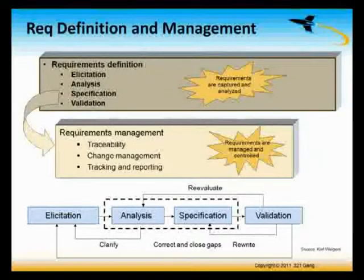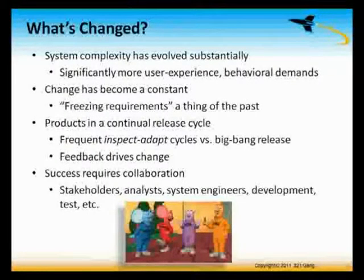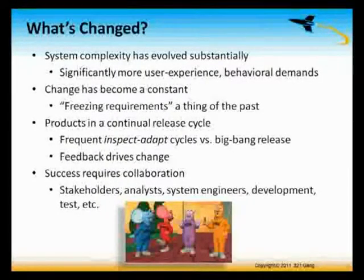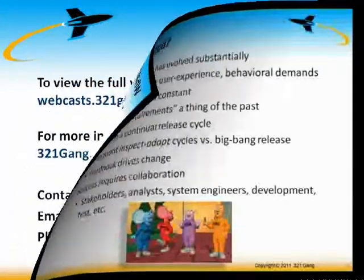We've been doing that effectively for the last several decades in software systems, with varying levels of success. An observation about what's changed over the last 10 years is that system complexity has grown dramatically, even just in the last five years. There's much more user experience and behavioral demands. If you think about the systems we look at today — a gas pump, your phone, any type of system — there's a lot more dynamic user behavioral interaction. Those are the types of activities that are very difficult to specify up front, to come up with a fixed requirement for how this system is supposed to behave.